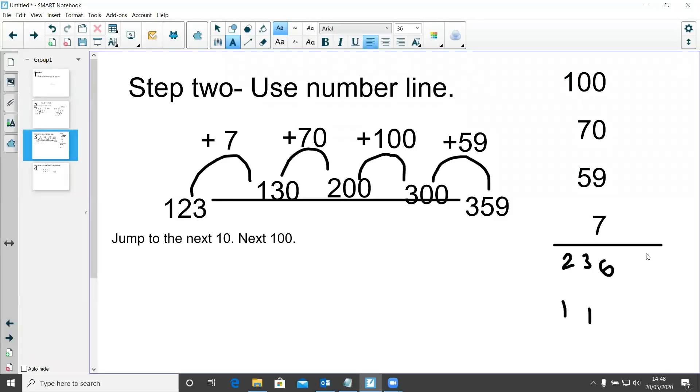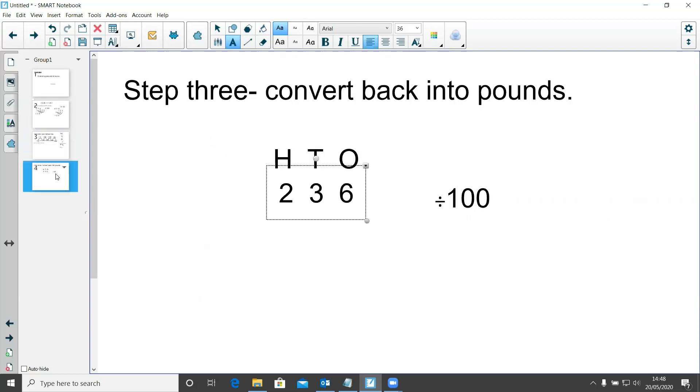Okay, so now that I have added up my amount here, I now have my answer, but it is still in pennies. So I have 236 pennies. So my final step is to convert this back into pounds, which I do by this time dividing by 100 because we're going to make it smaller. So this time it's going to move two places to the right, and again it's going to move two places because we have two zeros.